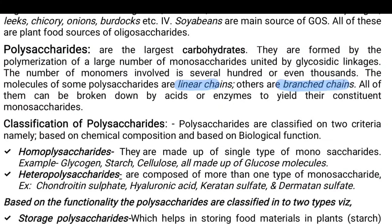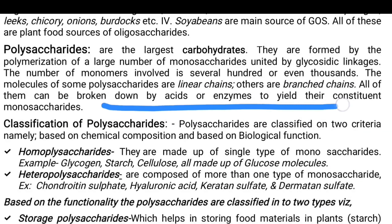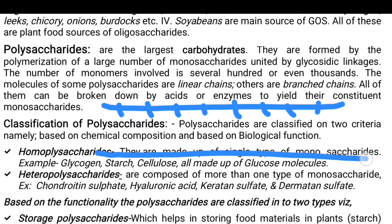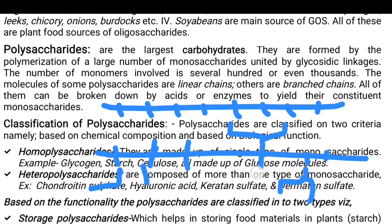For example, a sequence 1, 2, 3, 4, 5, 6, 7, 8 is linear, whereas a branched structure has side chains coming off it. Dealing now with the classification of polysaccharides: they are classified on two criteria — first based on chemical composition, second based on biological function.